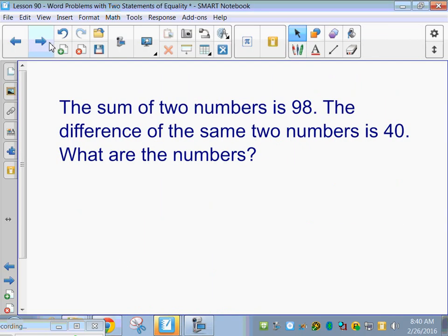The sum of two numbers is 98. The difference of the same two numbers is 40. What are the numbers? So the sum of two numbers is 98. That's one equation. The difference of the numbers is 40. That's another equation.